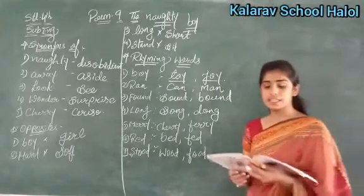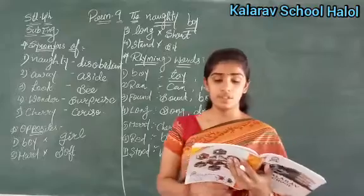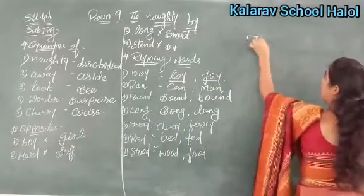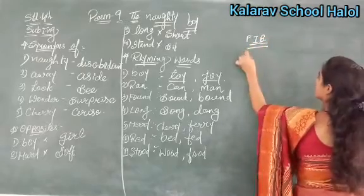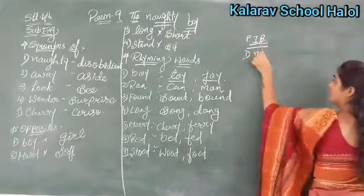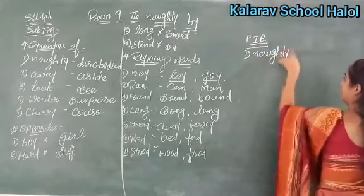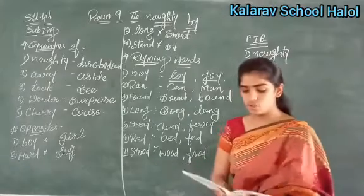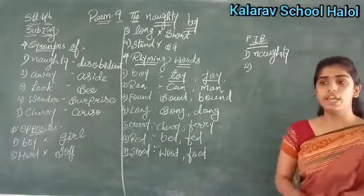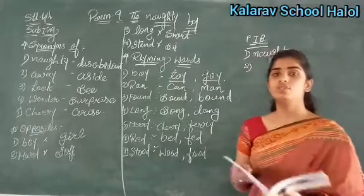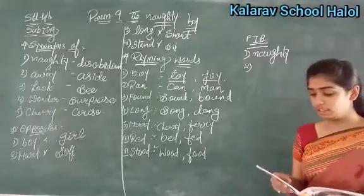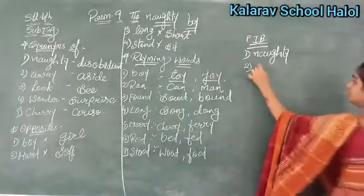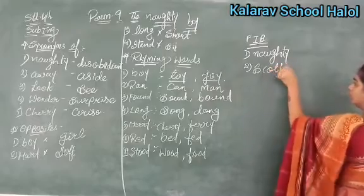Now see the next exercise — it is fill in the blanks. Okay? See the first one: 'The boy in the poem is dash.' How was the boy? He was very naughty. So in the first blank, you will write: naughty. Now the second number: 'The naughty boy went to dash to see the people there.' Where did the naughty boy go? He went to Scotland. So what will you write in the second one? Scotland. Okay?